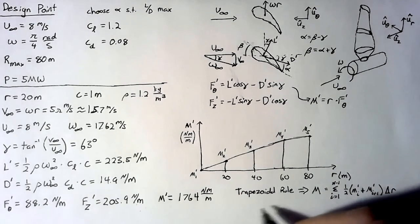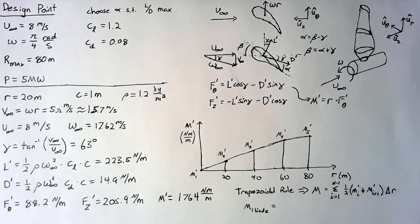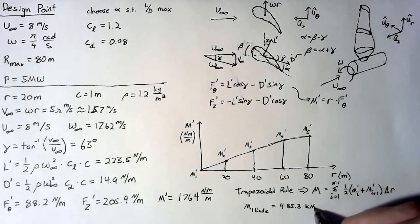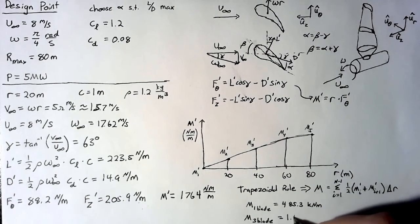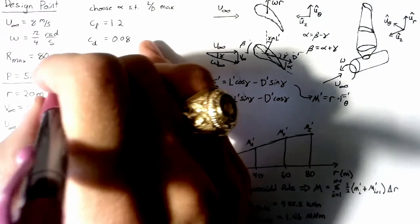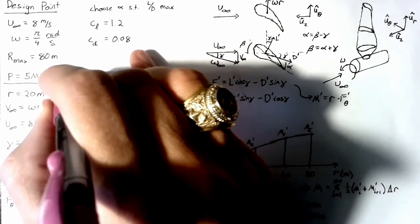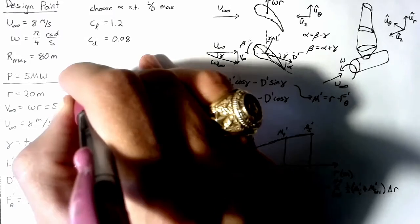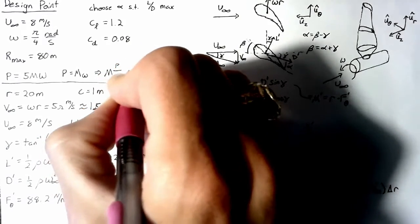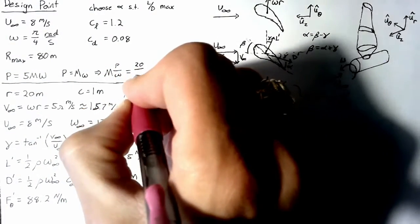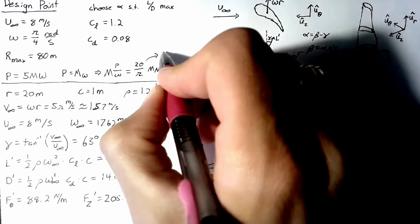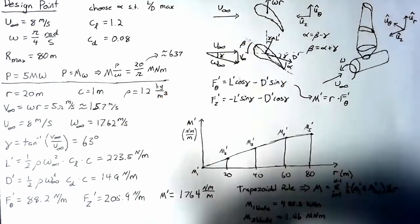Now, what we end up with after integrating is the moment caused by one blade. And this turns out to be 485.3 kNm. So the moment of three blades is 1.46 mNm. Alright, so how close are we? We can calculate the moment we need from the equation that power is equal to moment multiplied by omega. This means that our moment is simply our power divided by omega, which turns out to be 20 divided by pi mNm. Now this value happens to be right around 6.37 mNm.